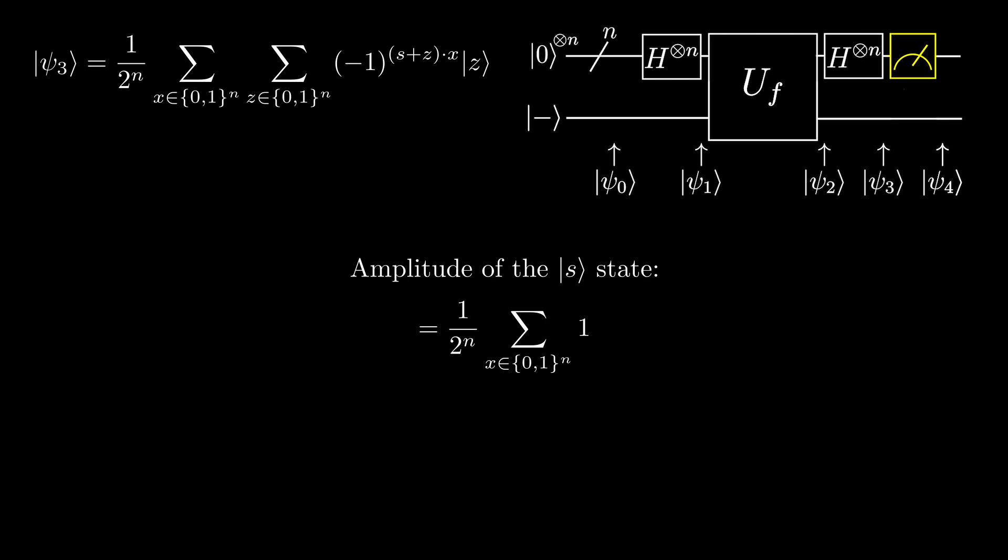Since there are 2 to the power of n bit strings of length n, there are 2 to the n possible values of x. So evaluating the sum, we get 2 to the power of n. This leaves the amplitude of the s state as 1. This means that the probability of measuring s after applying the algorithm is 1.